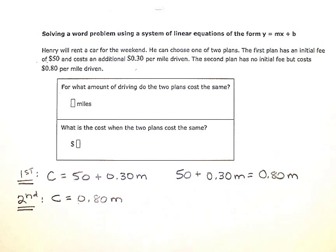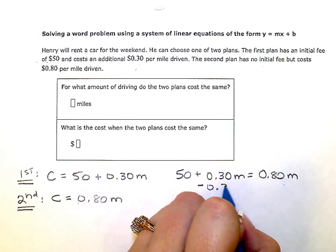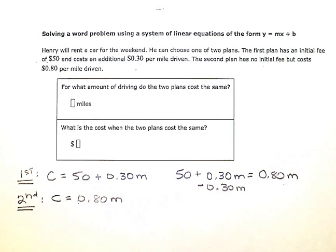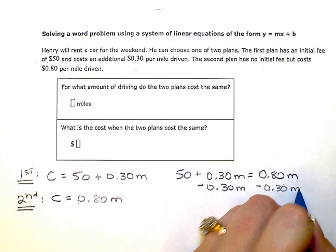And then I'm just going to go ahead and solve. So since I have variable terms or m terms on both sides, I need to zero out one of them or eliminate one of them. So I'm going to subtract 0.3 m from both sides, 0.3 m that is.